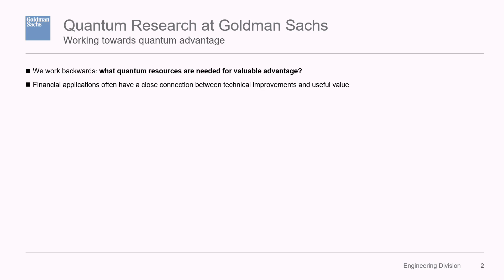Finance is a good place to look for quantum advantage for a few reasons. One is that the problems are pretty concretely benchmarked mathematically already in the classical case. Two, a small technical improvement can be employed globally relatively quickly and linked to financial value relatively directly. Of course, there's a trade-off: in contrast to simulations in quantum chemistry or materials design, our problems are not natively about quantum systems, so that requires us to be a little bit more creative in how we apply computing technology.